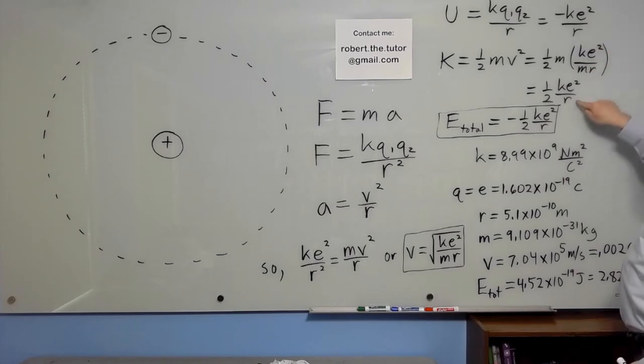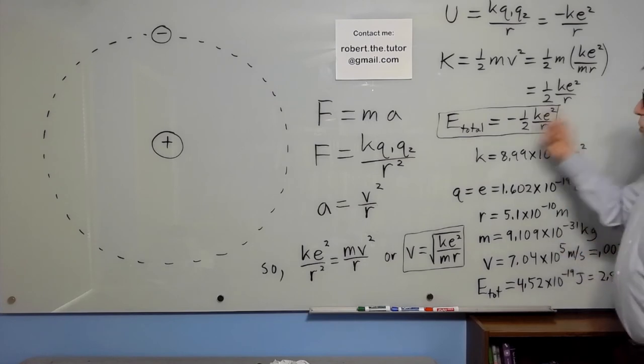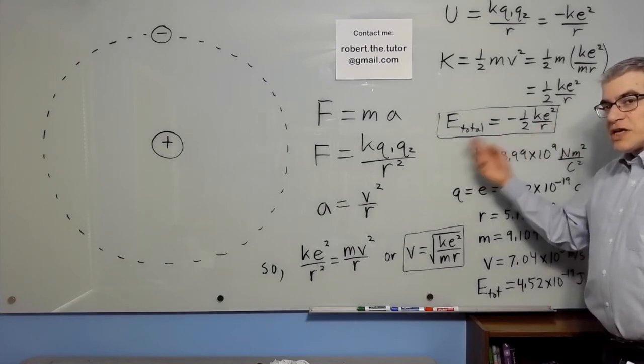They're very similar. When you add them up, you get minus 1 half KE squared over R. The total energy is the negative of the kinetic.